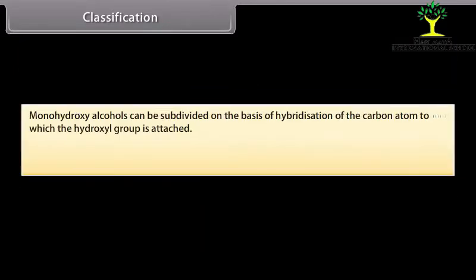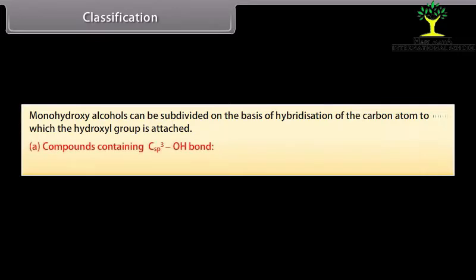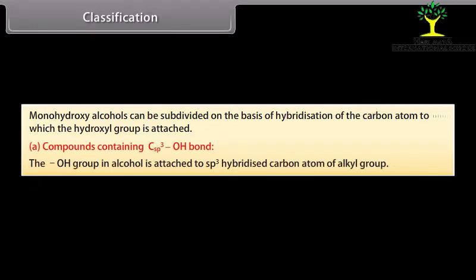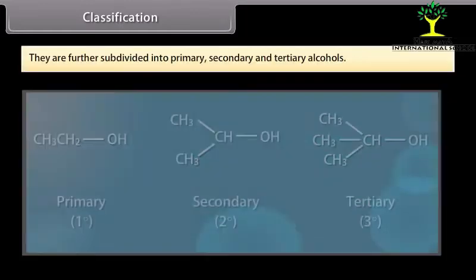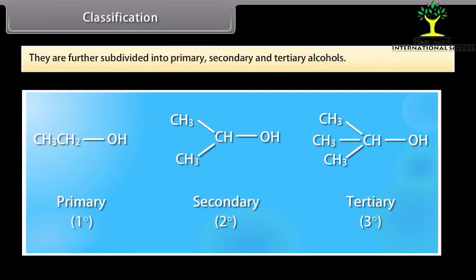Monohydroxy alcohols can be subdivided on the basis of hybridization of the carbon atom to which the hydroxyl group is attached. Compounds containing sp3 hybridized carbon atom bonded with the hydroxyl group — the hydroxyl group in alcohol is attached to an sp3 hybridized carbon atom of the alkyl group — are further subdivided into primary, secondary and tertiary alcohols.